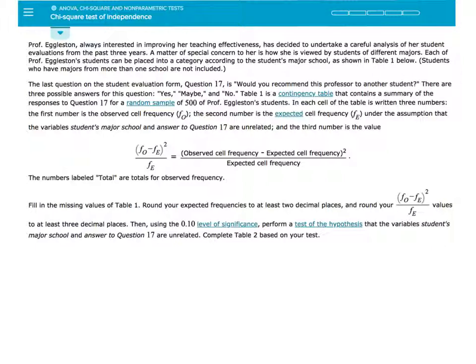In each cell of the table is written three numbers. The first number is the observed cell frequency, f sub o. The second number is the expected cell frequency, f sub e, under the assumption that the variables student's major school and answer to question 17 are unrelated. And the third number is the value, observed cell frequency minus expected cell frequency quantity squared, divided by expected cell frequency.